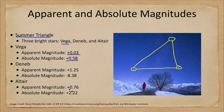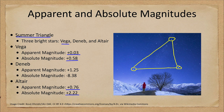Altair is a little fainter than Vega at an apparent magnitude of +0.76 — remember, a bigger number means a fainter star. Its absolute magnitude is +0.22, so it also appears brighter than it would at 10 parsecs, meaning it too is closer than 10 parsecs. Both Vega and Altair are relatively close to us.